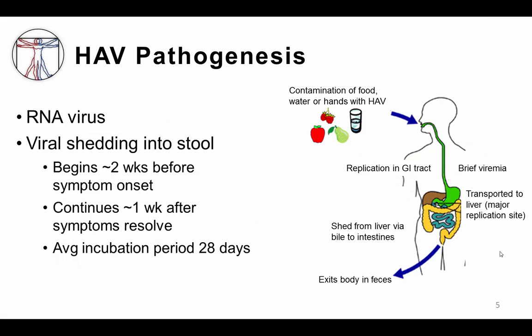The first step in the pathogenesis of hepatitis A virus begins with a person ingesting the virus via contaminated food or water or on soiled hands. Once inside the body, hepatitis A begins to replicate in the oropharynx and in the upper GI tract. Once the virus has reached a critical mass, it can enter the bloodstream and travel around the body. The virus makes its way to the liver hepatocytes, which are its major replication site. From there, virus is shed into the bile, which transmits the virus into the intestines and then outside the body into feces.